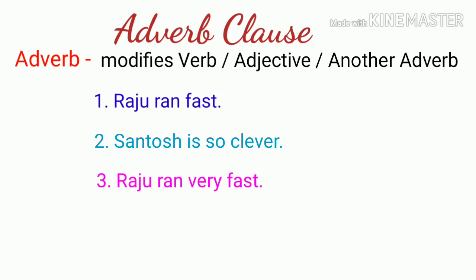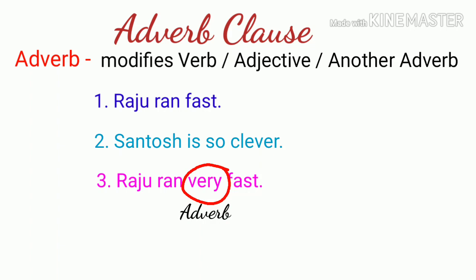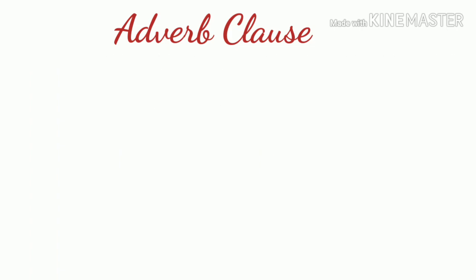So in the first sentence 'fast' is an adverb - a word that modifies a verb, adjective, or another adverb. An adverb clause, meaning kriya vishishan bodhak upvakya, works the same way but as a clause. Now let's see the types of adverb clauses.